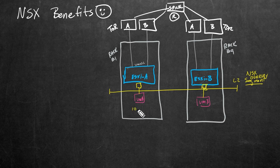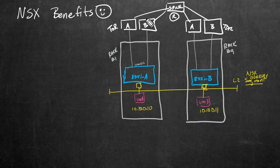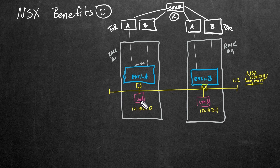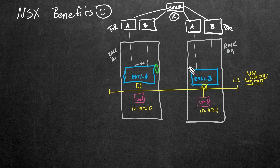Let me assign IP addresses: 10.10.0.10 for VM A and 10.10.0.11 for VM B. On the back end, we have a problem to solve — we don't have the same layer-two VLAN connectivity from rack one all the way over to rack nine, because we have routing at the spine layer between both of them. So how, if VM A tries to communicate with VM B, is that communication actually possible? We are going to create a tunnel between ESXi A and ESXi B.